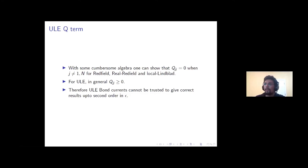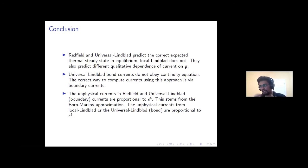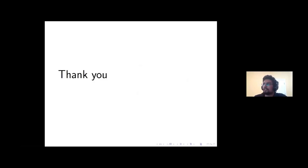To summarize: Redfield and universal Lindblad approaches predict the correct expected thermal steady state in equilibrium while local Lindblad does not. These approaches also predict qualitatively different dependence of current on g, the inter-site coupling parameter. Universal Lindblad bond currents do not obey the continuity equation — the deviation is of order epsilon squared — so the correct way to compute currents using the universal Lindblad approach is via boundary currents. The unphysical currents that arise via Redfield and universal Lindblad boundary currents are proportional to epsilon to the fourth and can be attributed to the Born-Markov approximation.